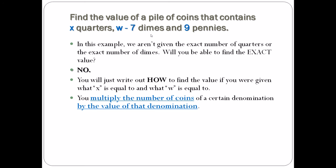We can write it as an equation. The value of the pile of coins, the mystery pile of coins—we do not know how many quarters there are, there's x of them—times 0.25, plus w minus seven times 10 cents.